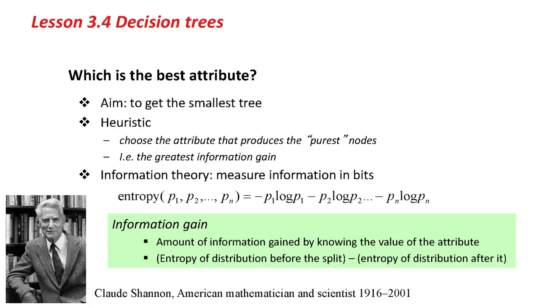Information theory was founded by Claude Shannon, an American mathematician and scientist who died about 12 years ago. He was an amazing guy. He did some amazing things. One of the most amazing things, I think, is that he could ride a unicycle and juggle clubs at the same time when he was in his 80s. That's pretty impressive. Anyway, he came up with the whole idea of information theory and quantifying entropy, which measures information in bits.